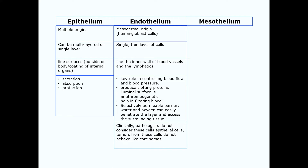Endothelial cells are of mesodermal origin and are always a single thin layer of cells. They do not line surfaces, but instead line the inner walls of blood vessels and lymphatics. We're beginning to appreciate a number of critical functions that endothelial cells perform, some of which are shown here, and some of which we'll discuss later in the video on vasculature. Clinically, pathologists do not consider these cells to be epithelial cells, since they do not behave as carcinomas.